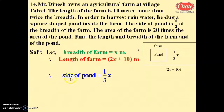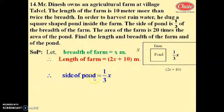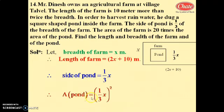The side of the pond is 1/3 of the breadth of the farm. So the side of the pond is (1/3)x. Since the pond is square-shaped, the area of the pond equals side squared, which is (1/3)x whole square.